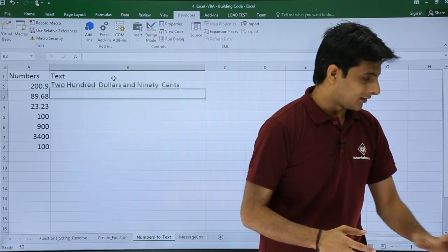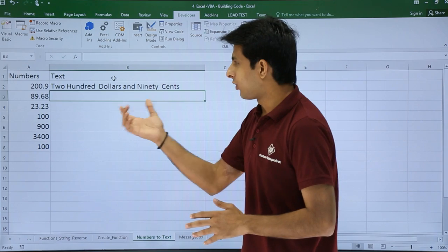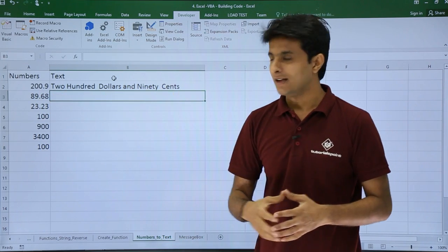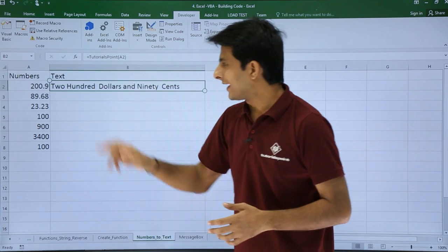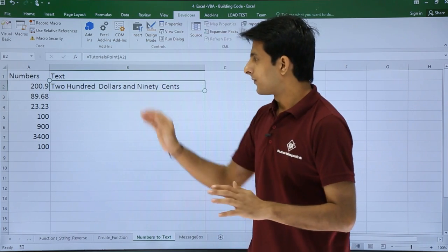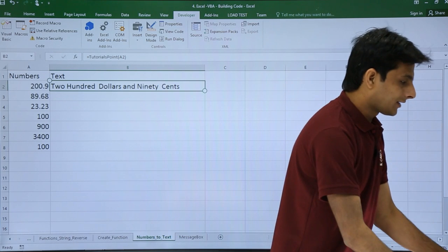Then finally press Enter. Once you press Enter, I've got the answer as Two Hundred Dollars and Ninety Cents. Do I need to write the formula again here? No, you just drag and fill and the formula will be copied at the bottom.